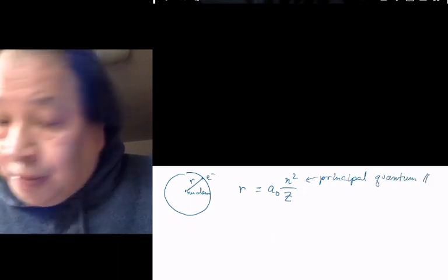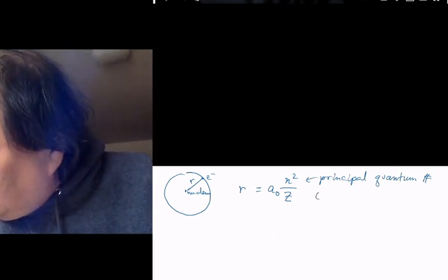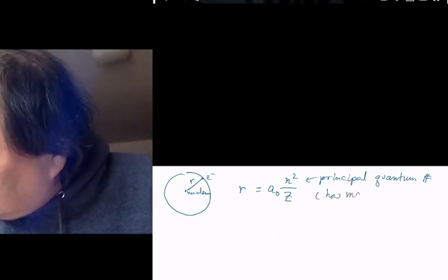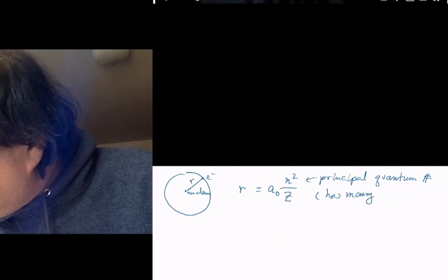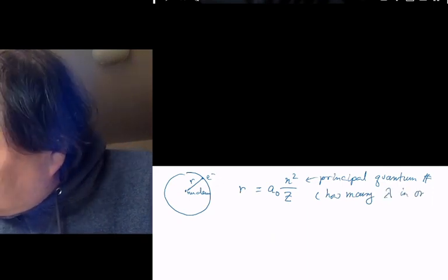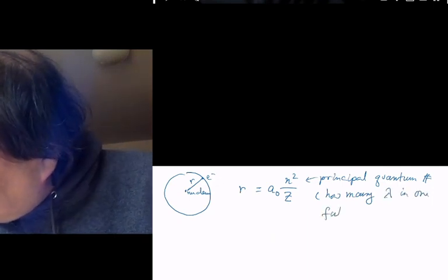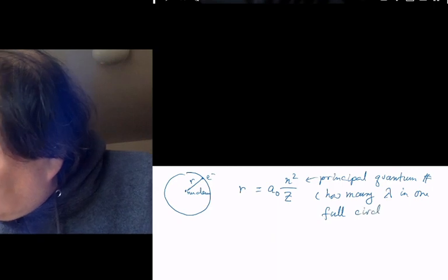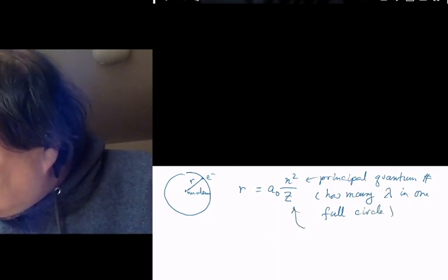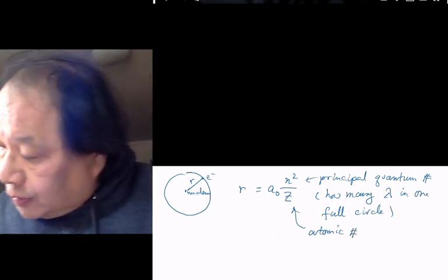The principal quantum number is how many wavelengths, how many lambda in one full circle and z is the atomic number. That formula is incredibly good.